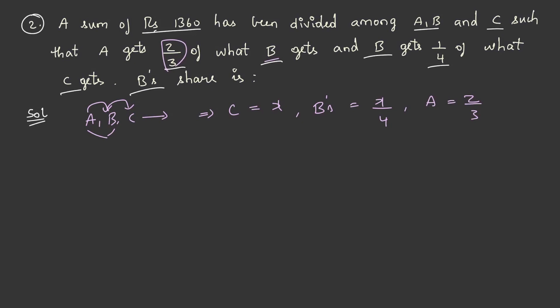So 2 by 3 into x by 4, which is equal to x by 6 rupees. So share of C is x rupees, share of B is x by 4 rupees, share of A is x by 6 rupees.